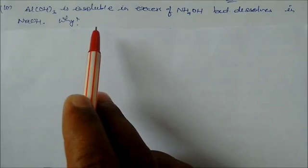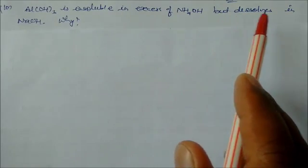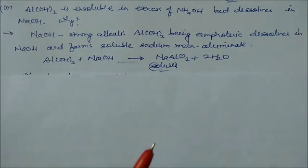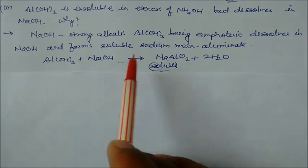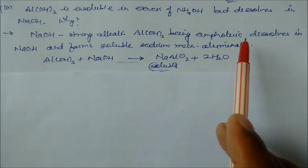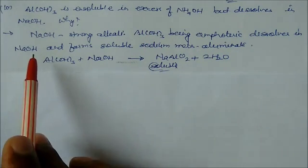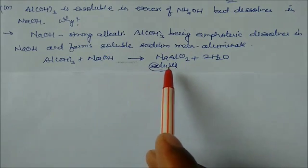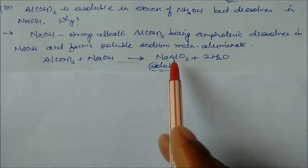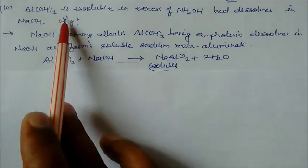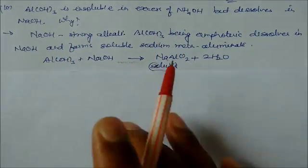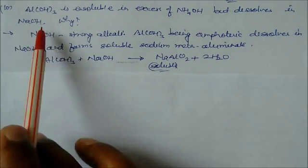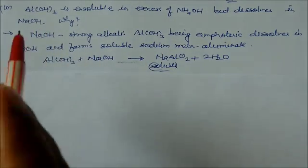Aluminum hydroxide is insoluble in excess ammonium hydroxide but dissolves in sodium hydroxide. Sodium hydroxide is a strong alkali and ammonium hydroxide is weak. Al(OH)3 dissolves in sodium hydroxide and forms soluble sodium meta-aluminate, but Al(OH)3 is insoluble in ammonium hydroxide. Reaction takes place with sodium hydroxide, that's why it is soluble.